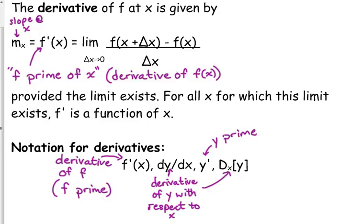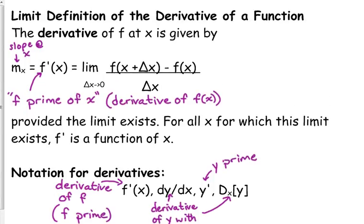So, as the gap in our x values is getting smaller, as delta x is approaching zero, this limit represents the slope of the curve at a specific point. And that's what we call the derivative or the instantaneous rate of change.